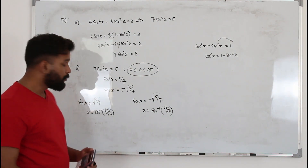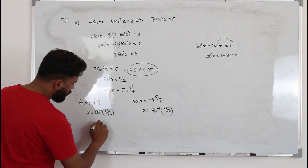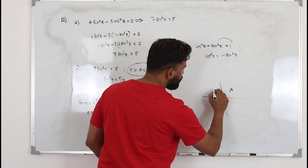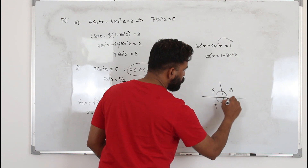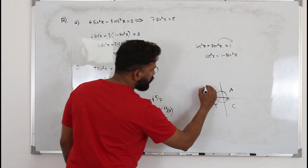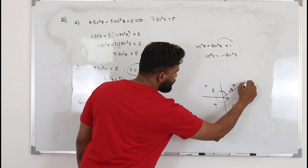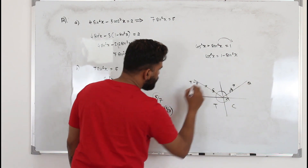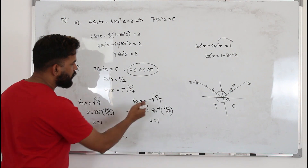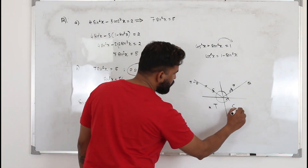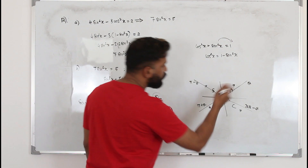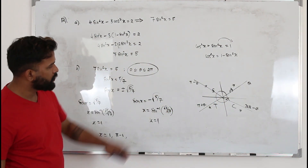They want the answer to one decimal place, so the principal value is approximately 1 radian. Draw the ASTC diagram. The limit 0 to 2π covers all four quadrants. For sin x positive: solutions are θ and π − θ. For sin x negative: solutions are π + θ and 2π − θ. You only need one ASTC diagram for all four solutions.